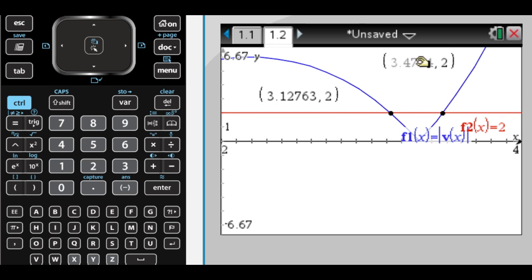I have 3.128 and 3.473. So on my paper, I would have just written absolute value of v of t equals 2, and then t equals approximately 3.128 and approximately 3.473. And that's part A.